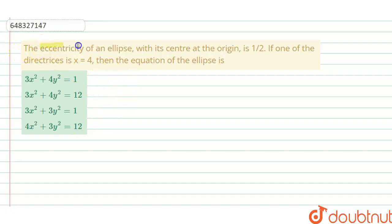The eccentricity of the ellipse with its center at origin is one by two. If one of the directrices is x equals four, then the equation of the ellipse is. As it is given that the center is origin, our general equation of the ellipse will be